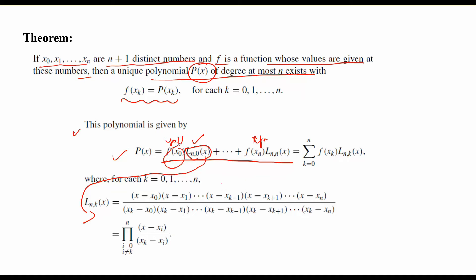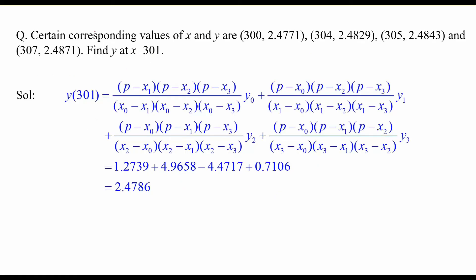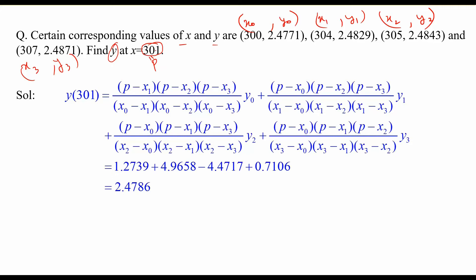Let us do an example to be more clear about how to find out the Lagrange polynomial using this formula. Here, corresponding values of x and y are given: x0, y0, x1, y1, x2, y2, x3, and y3. We want to find out the approximate value at p = 301, where you want to find the value of y. The data for 301 is not given, so the target is to find an approximating polynomial using these four data points and then substitute x = 301 to find the value of y.